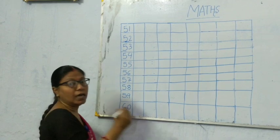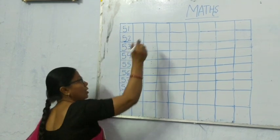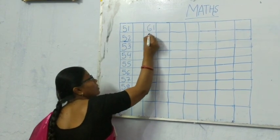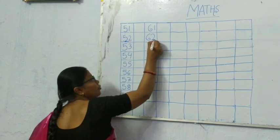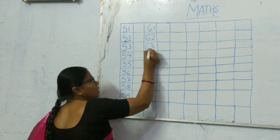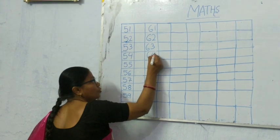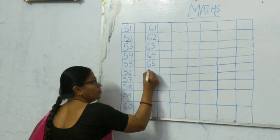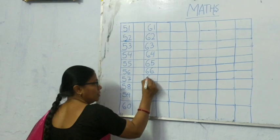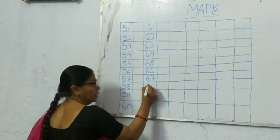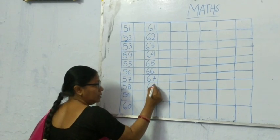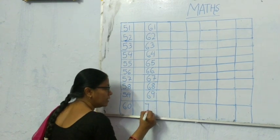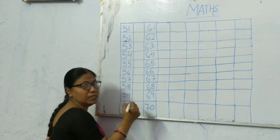Again, we will leave one column. We will start from another. 61, 62, 63, 64, 65, 66, 67, 68, 69, 70.